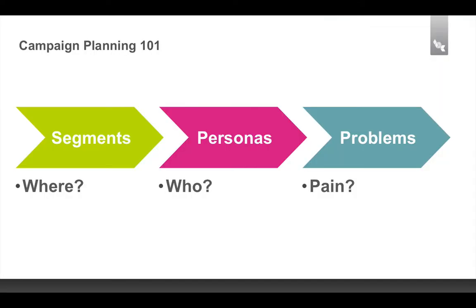In our campaign planning framework, we start with our customer segments — the types of organizations that we are targeting. Because we're a B2B marketing organization, we need to think in terms of what type of companies, or what we call firmographics, we want to reach. We have primarily two segments: digital media companies and digital marketing organizations across several different industries.